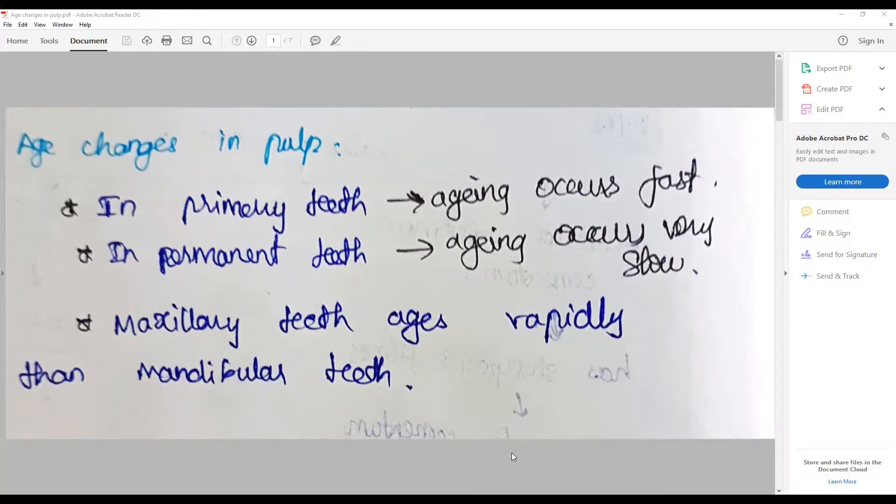The answer that has to be written for this is: the age changes in pulp can be classified as that happening in the primary teeth and permanent teeth, because the aging in primary teeth pulp occurs fast and the permanent teeth occurs very slow. Generally maxillary teeth ages rapidly than the mandibular teeth, so our answer has to encompass all the aspects.